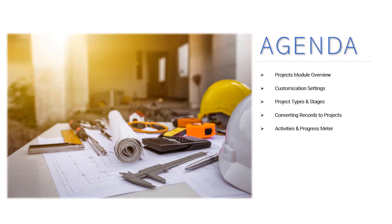So let's go ahead and get started. The first thing we'll be looking at are the customization settings in projects. There are some customization settings where you create different project types, and with each type you create, you can create stages. So you can have multiple types, and then for each type you have different stages. Then we'll go to the process of taking an opportunity record — you can also convert from a quote or a sale — converting an opportunity to create a project record, and then monitoring that project through the different activities that you set.